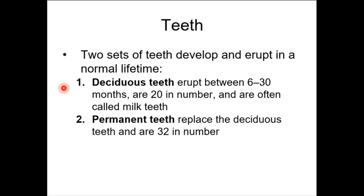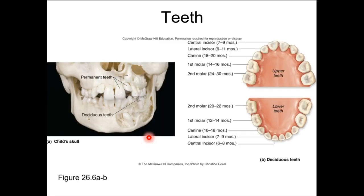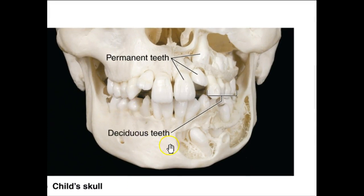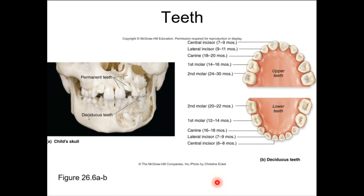Deciduous teeth, also known as milk teeth or baby teeth — you typically have 20 of them, which are replaced by permanent adult teeth. You should ultimately have 32 adult teeth, including the four third molars. In a childhood skull, when you remove the anterior portion of the mandible or maxilla, you can see adult permanent teeth coming in from behind, pushing the deciduous teeth out. Deciduous teeth follow the pattern: central incisor, lateral incisor, canine, and two molars.